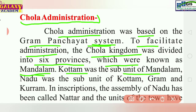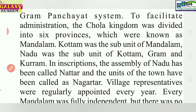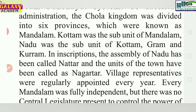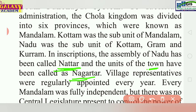Kutam was a subunit of mandalam. Naadu was a subunit of kutam. Gram and kurram were subunits of naadu. In inscriptions, the assembly of naadu has been called natar. The unit of villages was called kutiti, and the unit of towns has also been called natar.